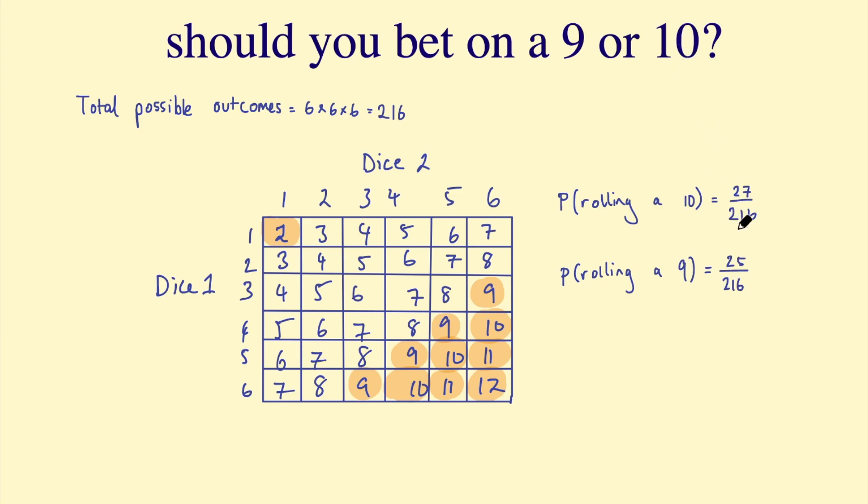It's a pretty small difference, though, right? 2 out of 216. If we convert these to percentages, this is a percentage of 12.5%. This is a percentage of approximately 11.6%, which makes it pretty difficult to notice if you're just rolling three dice and choosing either a 9 or a 10. You're probably not going to notice this.